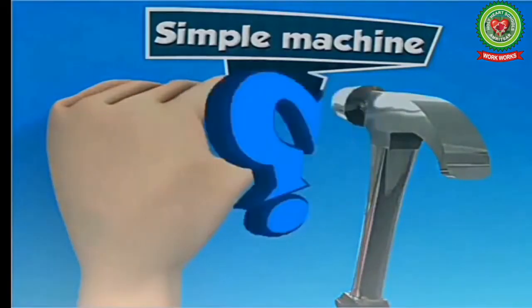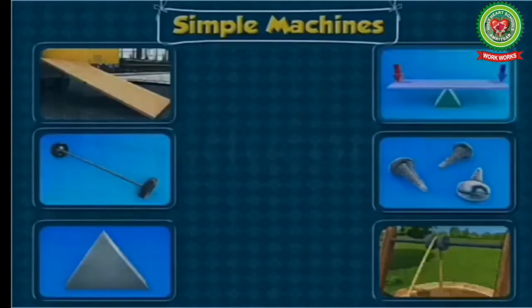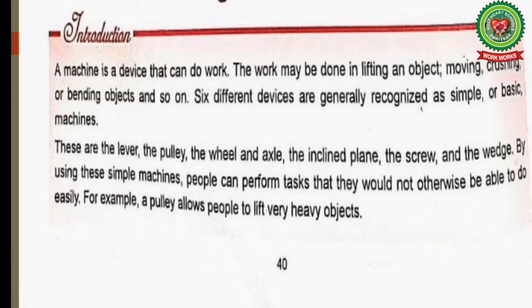Now, come to page 40 in your books. A machine is a device that can do work — the work may be done in lifting an object, moving, crashing, or bending objects, and so on. Six different devices are generally recognized as simple or basic machines: the lever, the pulley, the wheel and axle, the inclined plane, the screw, and the wedge. Using these, people can perform tasks — for example, a pulley allows people to lift very heavy objects.